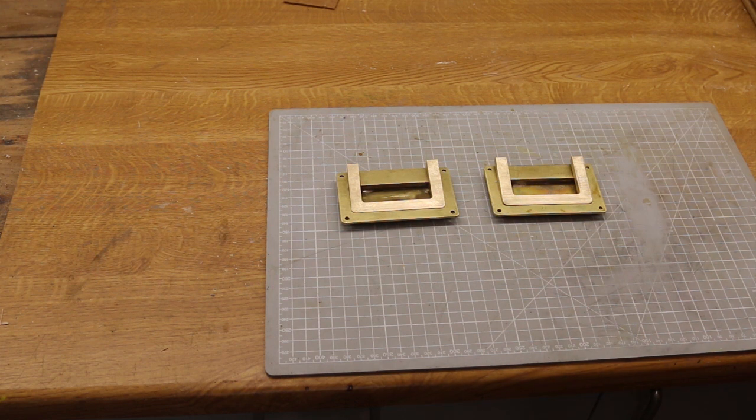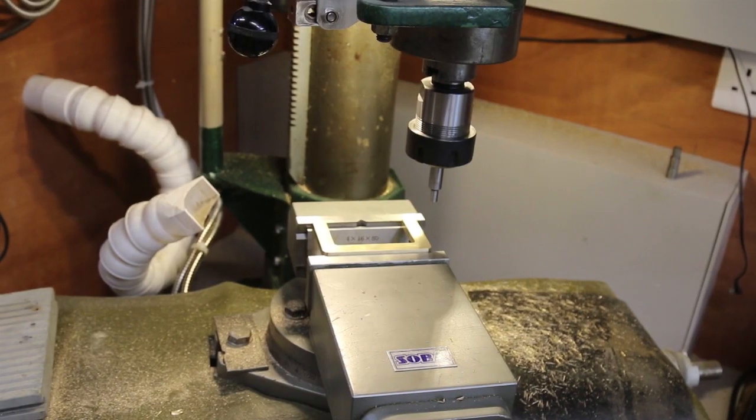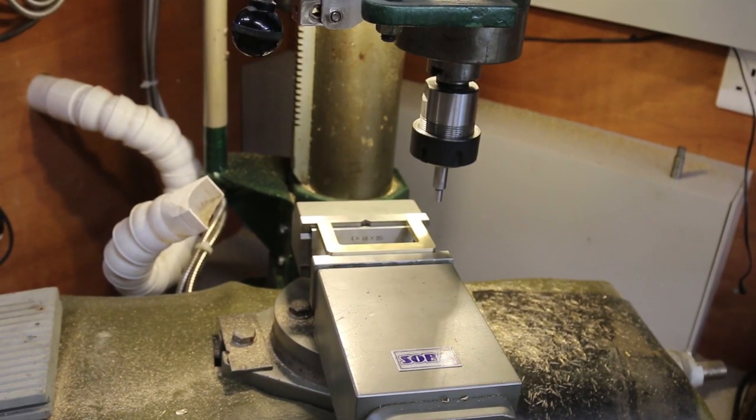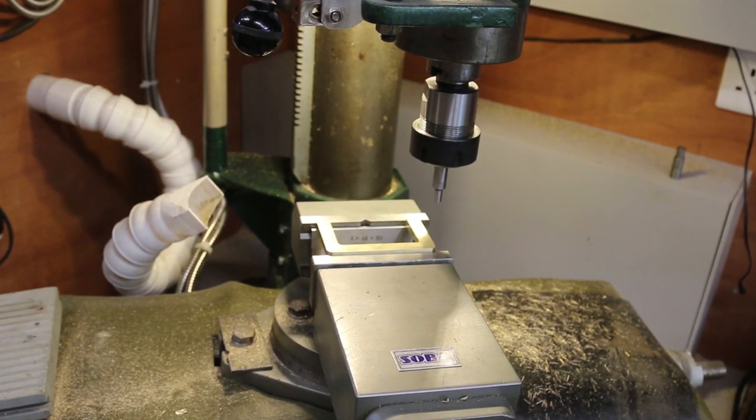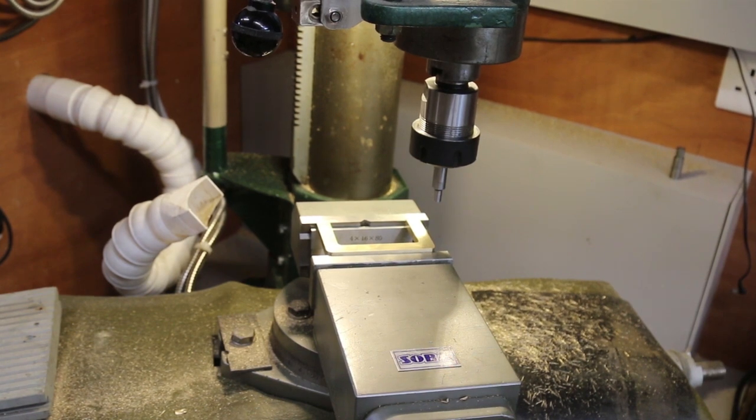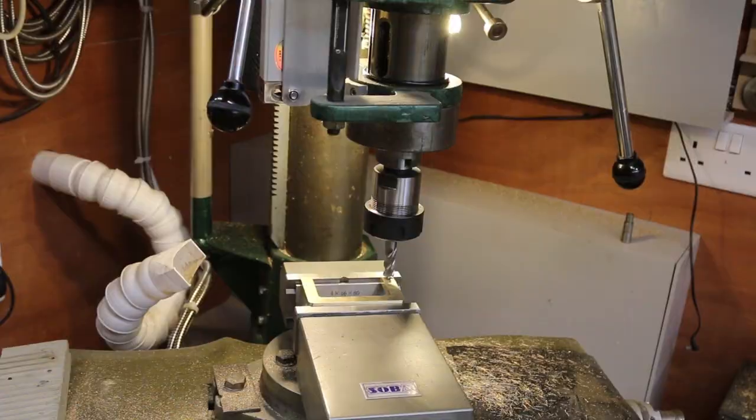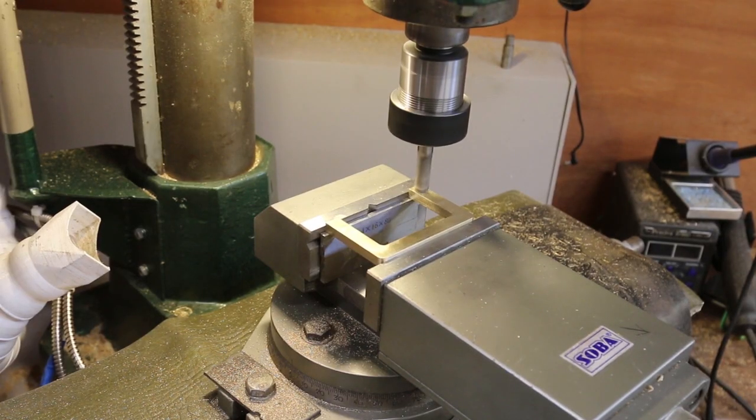Next step is to arrange the hinge. By doubling up on my parallels. I managed to get the right amount showing. In order to machine it. Using an edge finder. I find the far side of my jaws. Then offset. To take the cutter to the right position. I lightly dust. To establish the depth. Then take 2mm off.